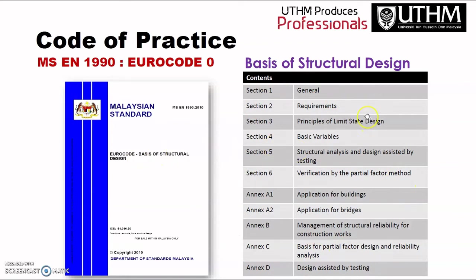You can download the Euro code and see its contents. For basic of structural design, we have: general requirements, principles of limit state design, basic variables, structural analysis, and design assisted by testing, verification of partial factor methods, application for buildings and bridges, management of structural reliability for construction works, basics of partial factor design and reliability analysis, and design assisted by testing — including sections and annexes.